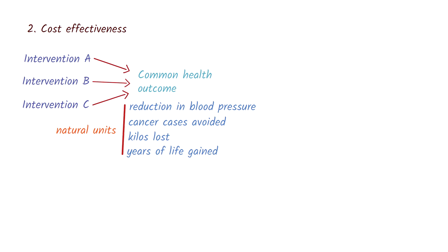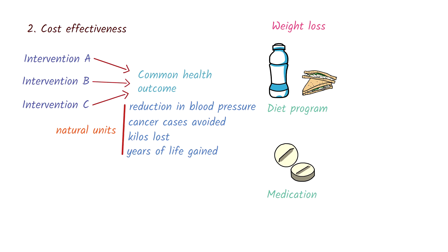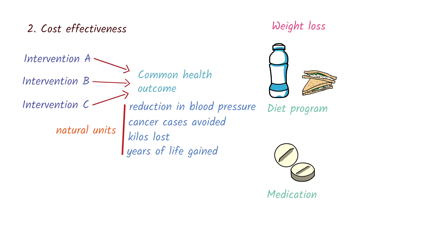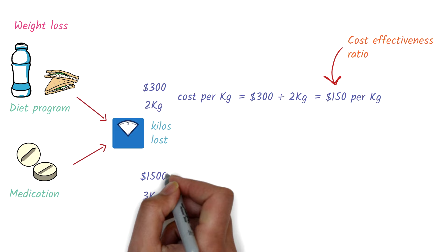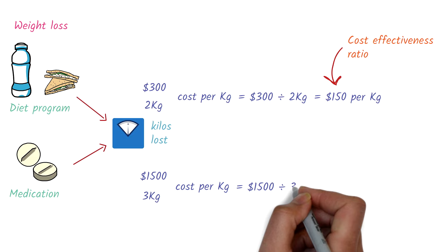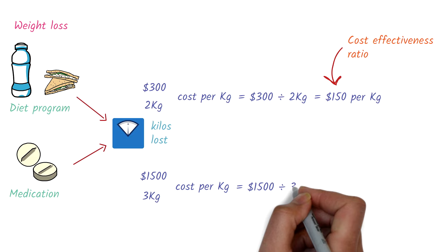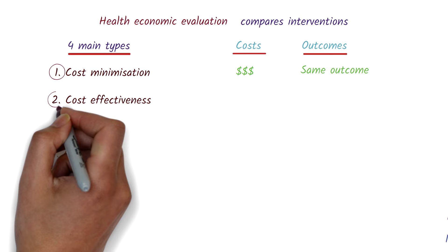Let's take a look at an example. Let's say we're comparing two different interventions to reduce weight: a diet program and weight loss medication. The health outcome we're interested in is how many kilos have been lost. The diet program had a 2 kg weight loss and cost $300, so the cost per kilo lost is $150. This is called a cost-effectiveness ratio. Comparing this with a medication-based program that leads to a weight loss of 3 kg but costs $1,500 — the cost per kilo lost is $500. So in this scenario, the diet-based program is more cost-effective compared to the medication-based program.